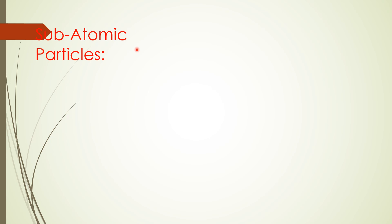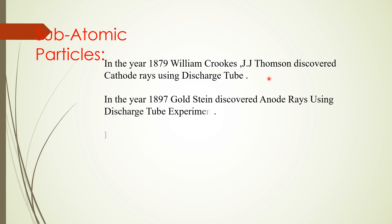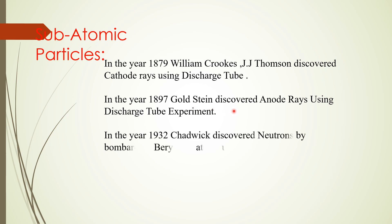What are the subatomic particles? As I told you, matter is not divisible as per John Dalton. Later, several scientists like J.J. Thompson, after the discharge tube was invented by William Crookes, conducted a series of experiments to prove the atom is divisible. In the year 1879, William Crookes and J.J. Thompson discovered cathode rays using the discharge tube. Later, these cathode rays were named as electrons by J.J. Stoney. In the year 1897, Goldstein discovered anode rays using the same discharge tube experiment. He named them as positive rays, anode rays, or canal rays. Later, they were named as protons.